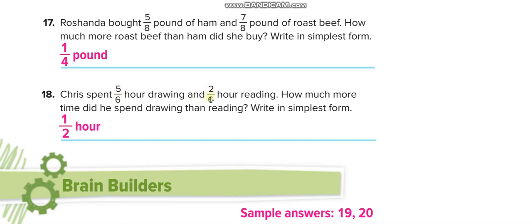5 over 6 minus 2 over 6 equals 3 over 6. Since 3 is half of 6, that equals one half.